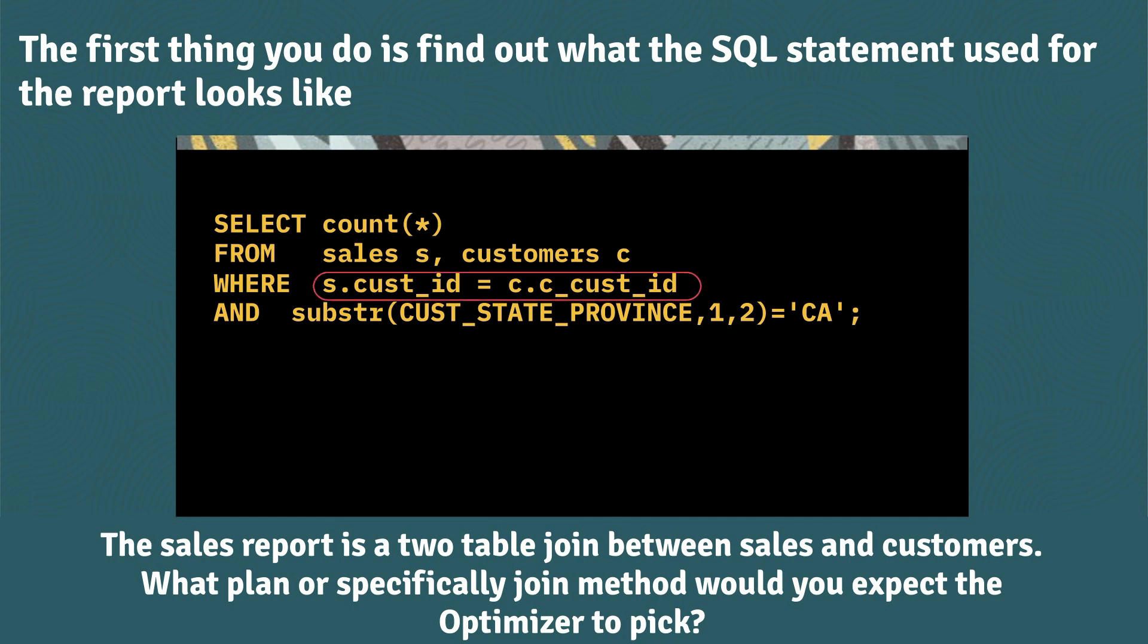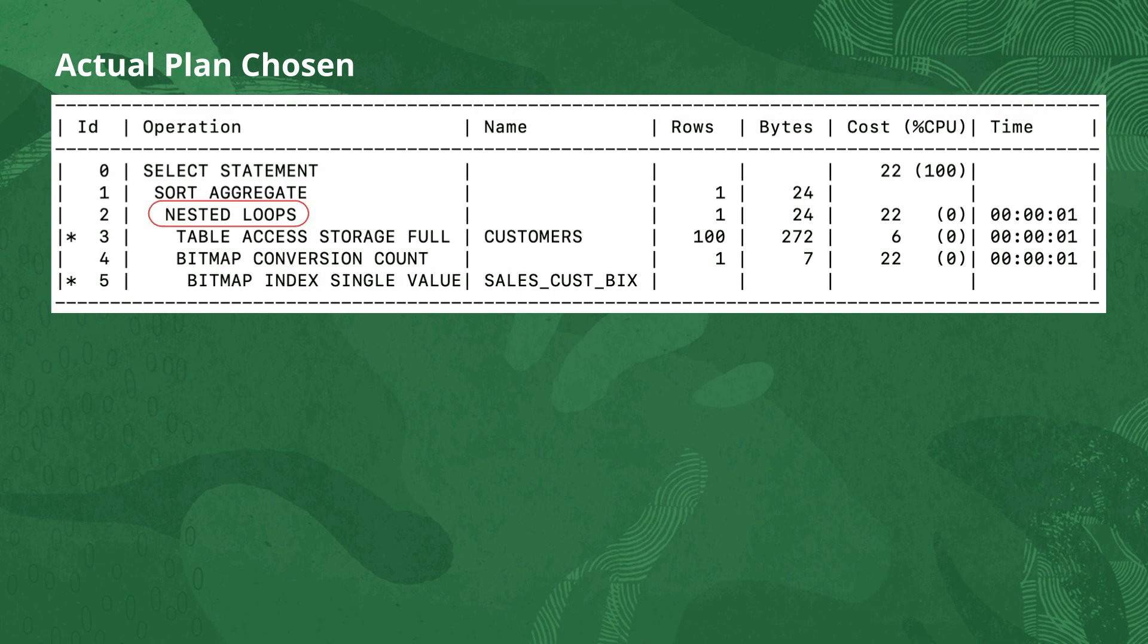In our case, there's an equality predicate on joining those two tables together. Based on the names of the table, I'm going to guess that these are larger tables with an equality predicate. I would have expected a hash join, but the actual plan we got was nested loops and it's actually got a very low cost.